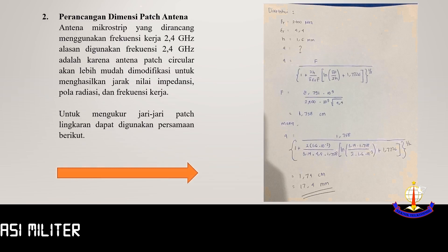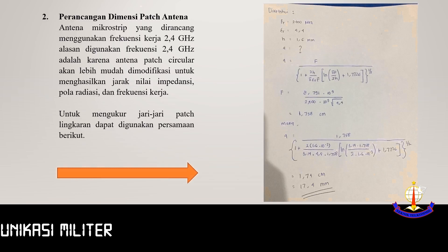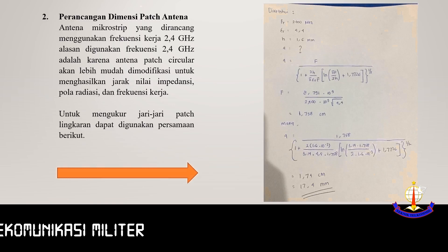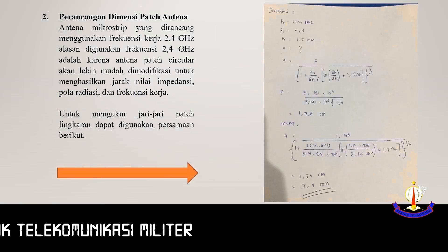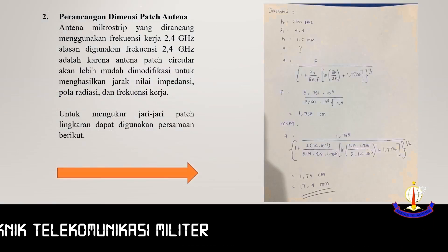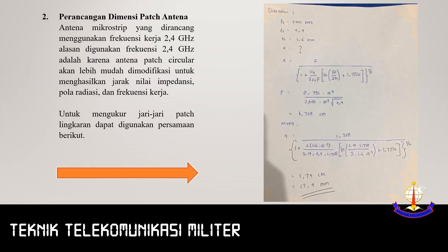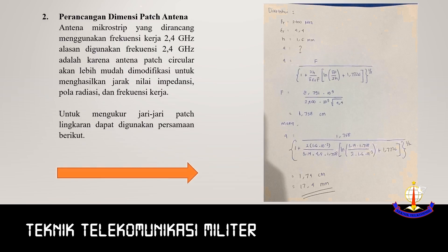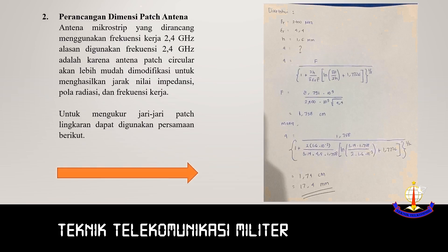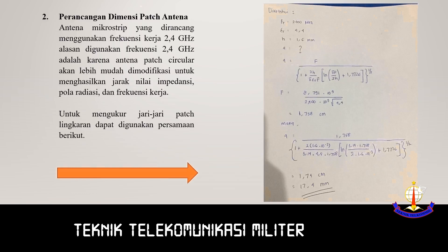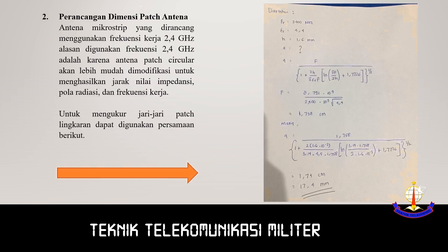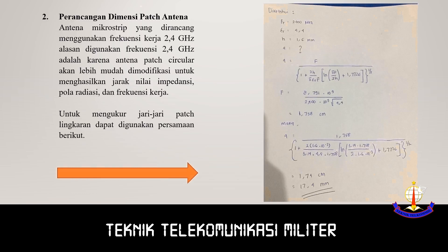Antena microstrip yang saya rancang menggunakan frekuensi kerja 2,4 GHz. Alasan saya menggunakan antena patch circular adalah karena antena patch circular akan lebih mudah dimodifikasi untuk menghasilkan nilai impedansi, pola radiasi, dan frekuensi kerja yang diinginkan. (The designed microstrip antenna uses a working frequency of 2.4 GHz. I chose a circular patch because it is easier to modify to achieve the desired impedance, radiation pattern, and operating frequency.)